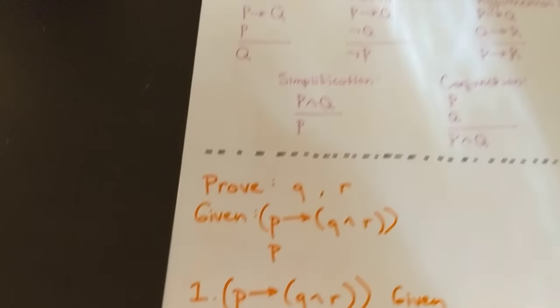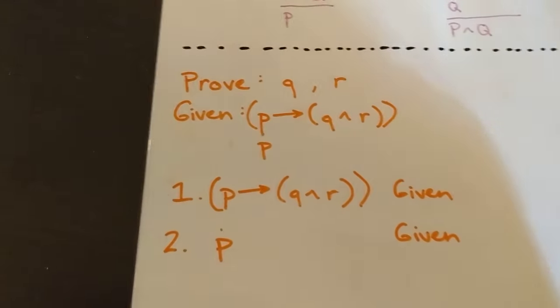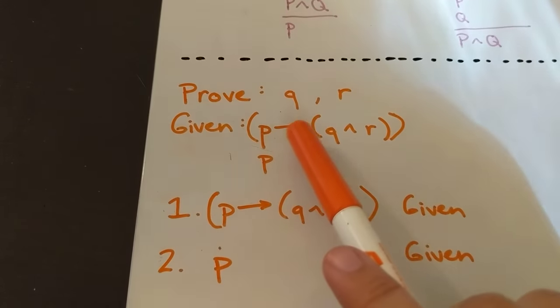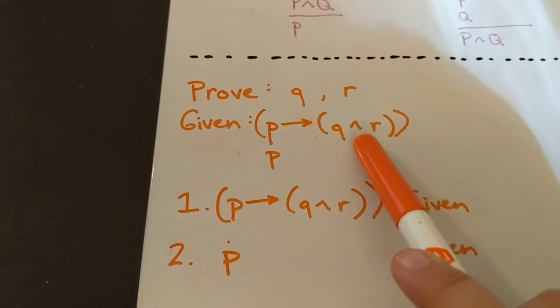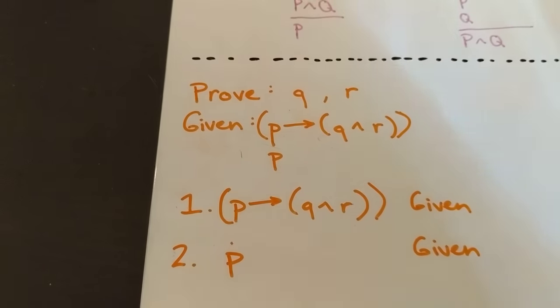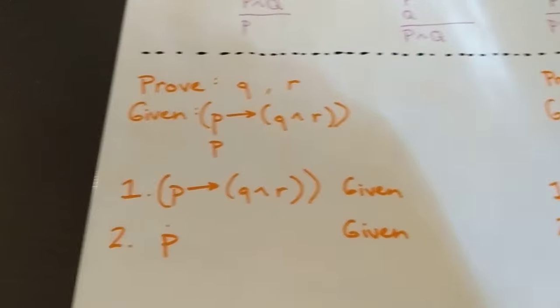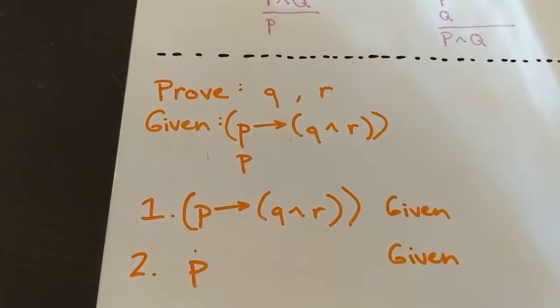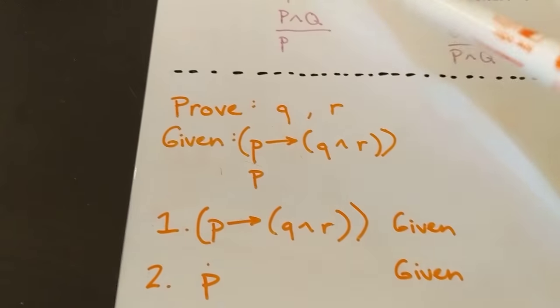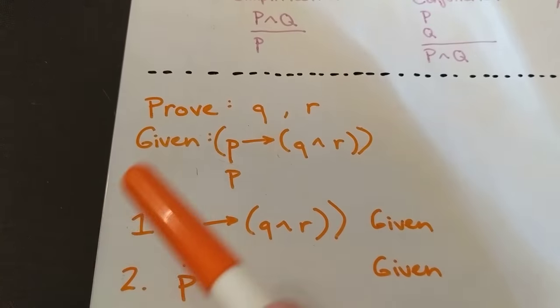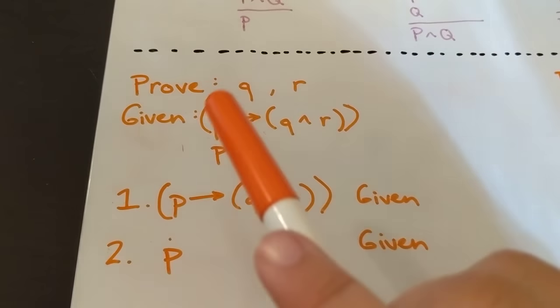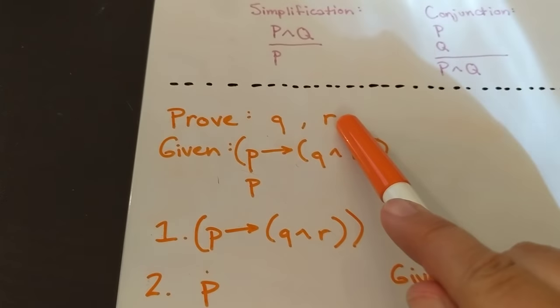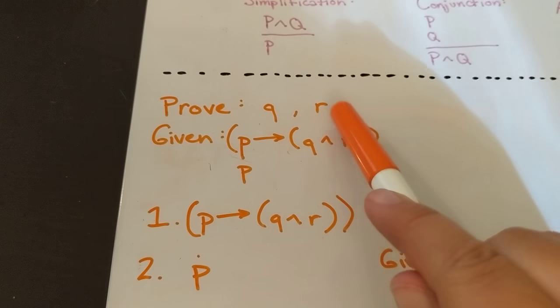Okay, so the first one that we're going to prove is that we have to prove Q and R given P implies Q and R, and P. This seems fairly obvious, but actually requires a couple of different steps to prove using our rules. Now the first thing to notice, though, is that when we're proving things using inference, usually it will say prove Q and R, and what that means is that Q is true and R is true.